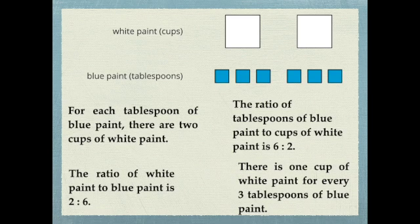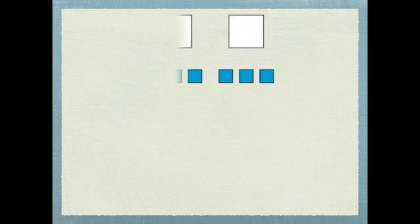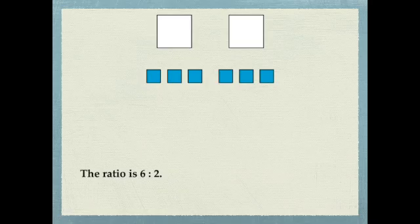If I wanted to change the diagram, I could make it be about anything. I don't have to be talking about blue paint or white paint. I could just take off the labels. And I could say the ratio is six to two. In that case, the unit ratio is three to one. For every one white, there's three blue. That's called a unit ratio.